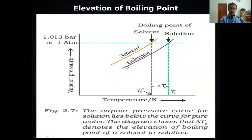As temperature increases, the vapor pressure of the solution also increases, but at T⁰_B, the vapor pressure is not yet equal to atmospheric pressure. The temperature must be increased further until the vapor pressure of the solution equals atmospheric pressure. This higher temperature, T_b, is the boiling point of the solution. The boiling point of the solution is greater than that of the solvent, and the difference is represented as ΔT_b — the elevation of boiling point.